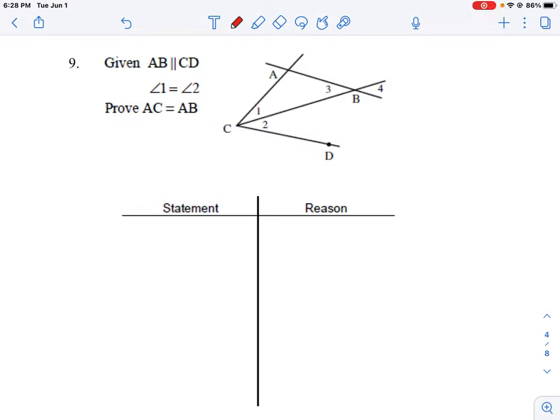Let's look at question number nine. We have a more complicated diagram here with several line segments that intersect. We have a triangle that is formed, and then we have some other line segments here. So let's start by looking at what's given.